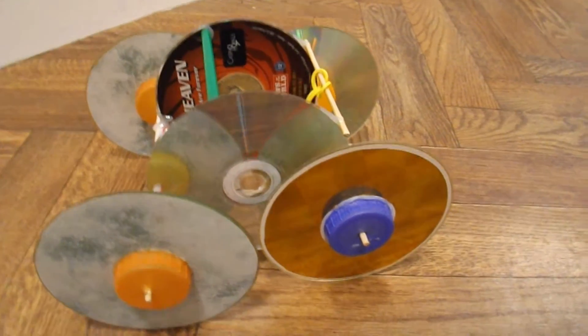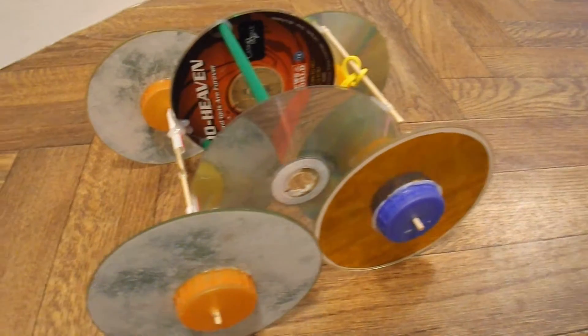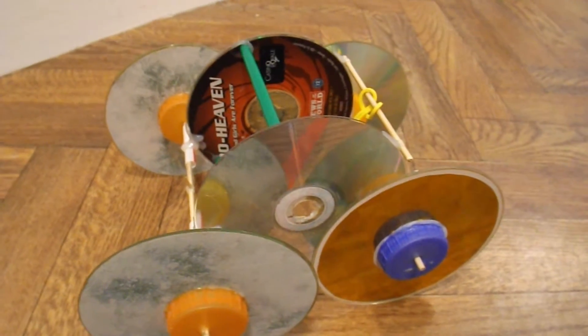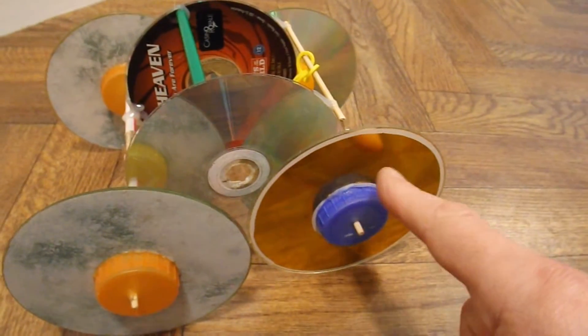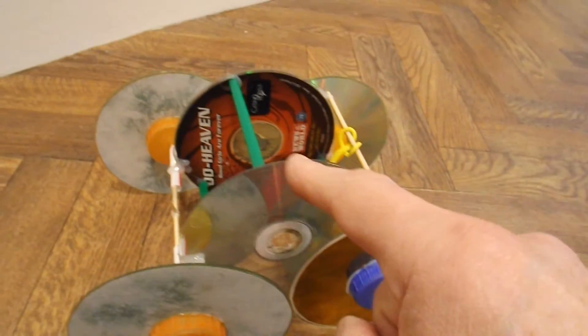Summary time. What have we got? We've got a rubber band powered car. Made from 6 CDs. 4 for the wheels and 2 for the body.